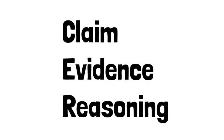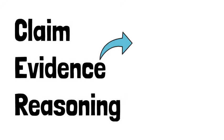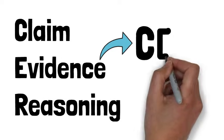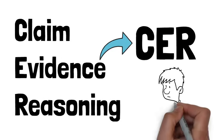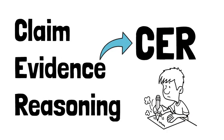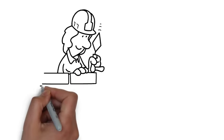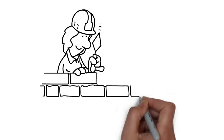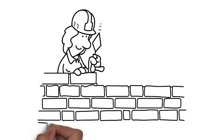Claim, Evidence, and Reasoning, or CER, is a simple method to organize your thinking and writing. When we argue, it is important that our ideas build upon each other. This makes our arguments sound logical and focused.